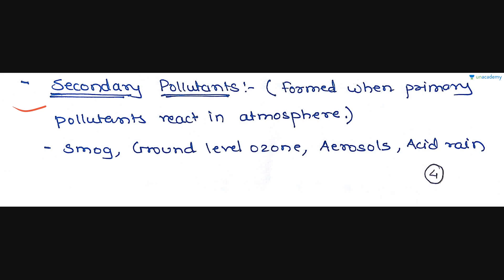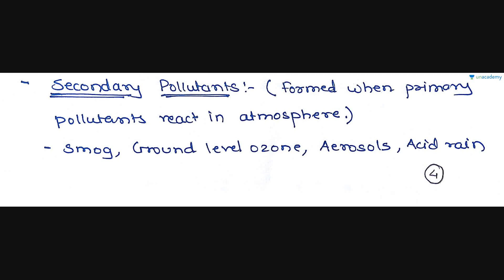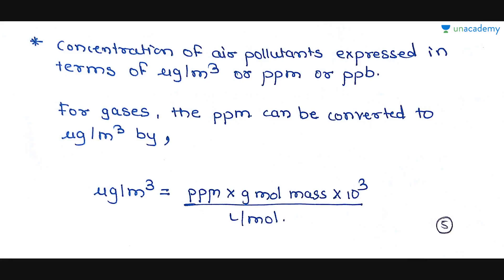That was the classification of air pollutants into primary and secondary. The characteristics of each will be covered in the next lesson. Some MCQs can be asked on this part. The concentration of air pollutants is expressed in terms of micrograms per meter cube, PPM (parts per million), or PPB (parts per billion).